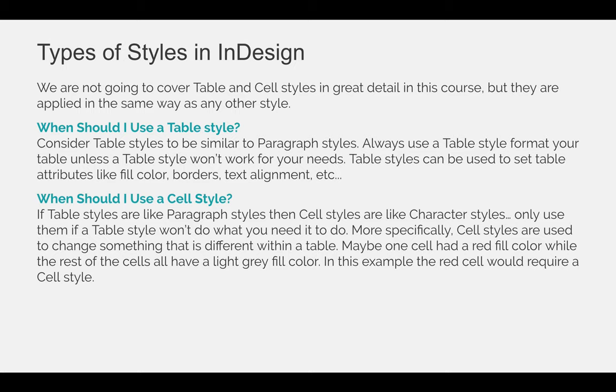You'll use cell styles similarly to the way you use character styles — only use them if a table style will not do what you need it to do. More specifically, cell styles are used to change something that is different within a table. Maybe one cell has a red fill color while the rest of the cells have a light gray fill color. In that example, the red cell would require a cell style.